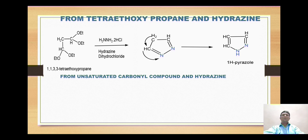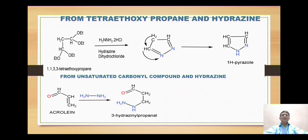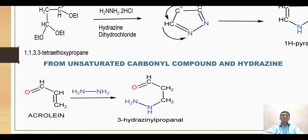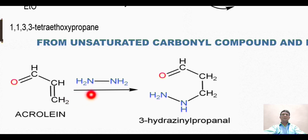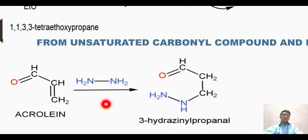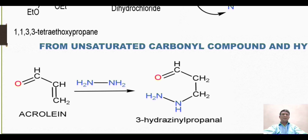The next synthesis is from an unsaturated carbonyl compound and hydrazine. The starting material is acroline (CH2=CH-CHO), an alpha-beta unsaturated carbonyl compound. Hydrazine acts as a nucleophile, and nucleophilic addition takes place such that the nucleophile attacks the beta carbon while the proton attacks the alpha carbon. One hydrogen goes to that carbon to form CH2, and the NH-NH2 group adds to the beta carbon, giving 3-hydrazineyl propanal.